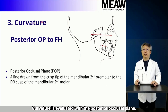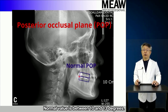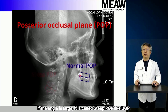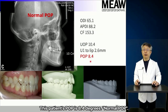Curvature is evaluated with the posterior occlusal plane (POP). The posterior occlusal plane is the angle formed by the line connecting the distobuccal cusp of the mandibular second molars and the cusp of the mandibular second premolar to the FH. The normal value is between 10 and 13 degrees. If the angle is large, it is called steep POP; if the angle is small, it is called flat POP. This patient's POP is 8.4 degrees — normal POP.